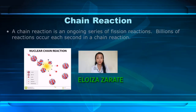Chain reaction: an ongoing series of fission reactions. Millions of reactions occur each second in a chain reaction. A chain reaction is a process in which neutrons released in fission produce additional fission in at least one further nucleus.